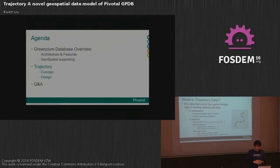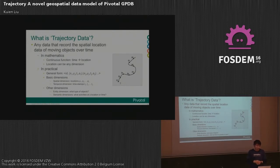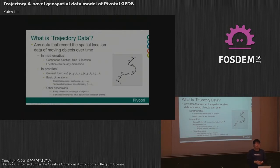Now let's talk about trajectory. A trajectory is the spatial location of moving objects over time. Every day we use it — for example, every person using a smartphone can record their location as time progresses. In mathematics, it's a continuous function, but in practice it's a discrete set of data points. Trajectory has two basic dimensions: time and location. It also has additional dimensions like speed and direction.